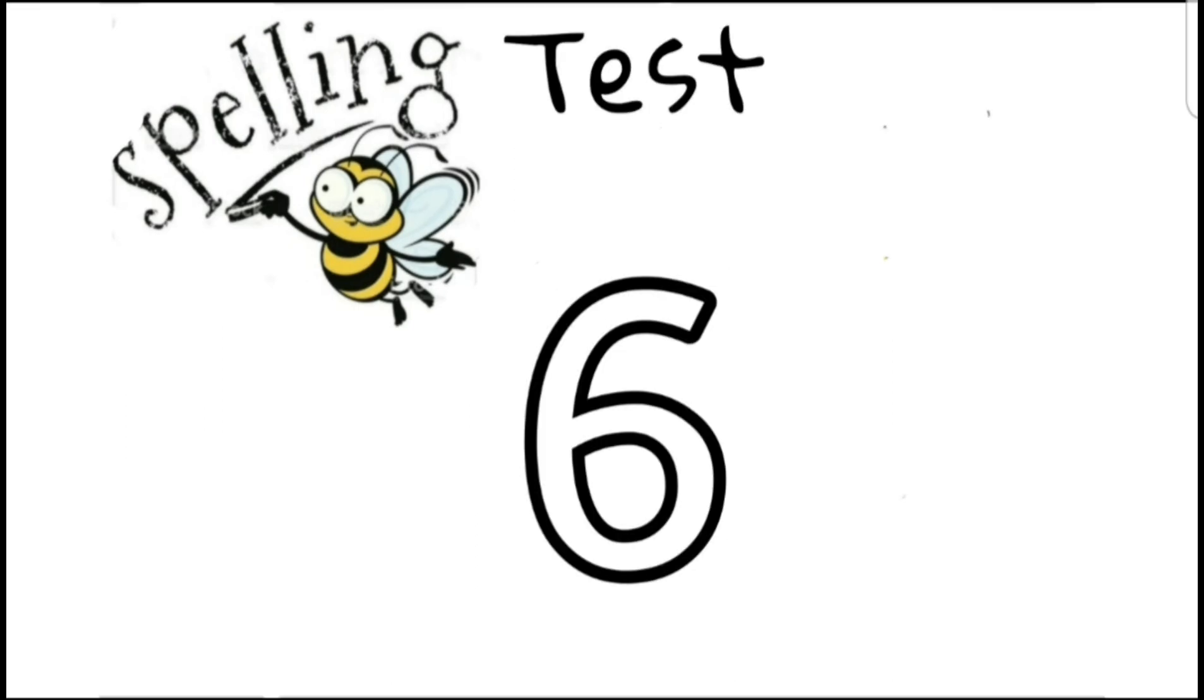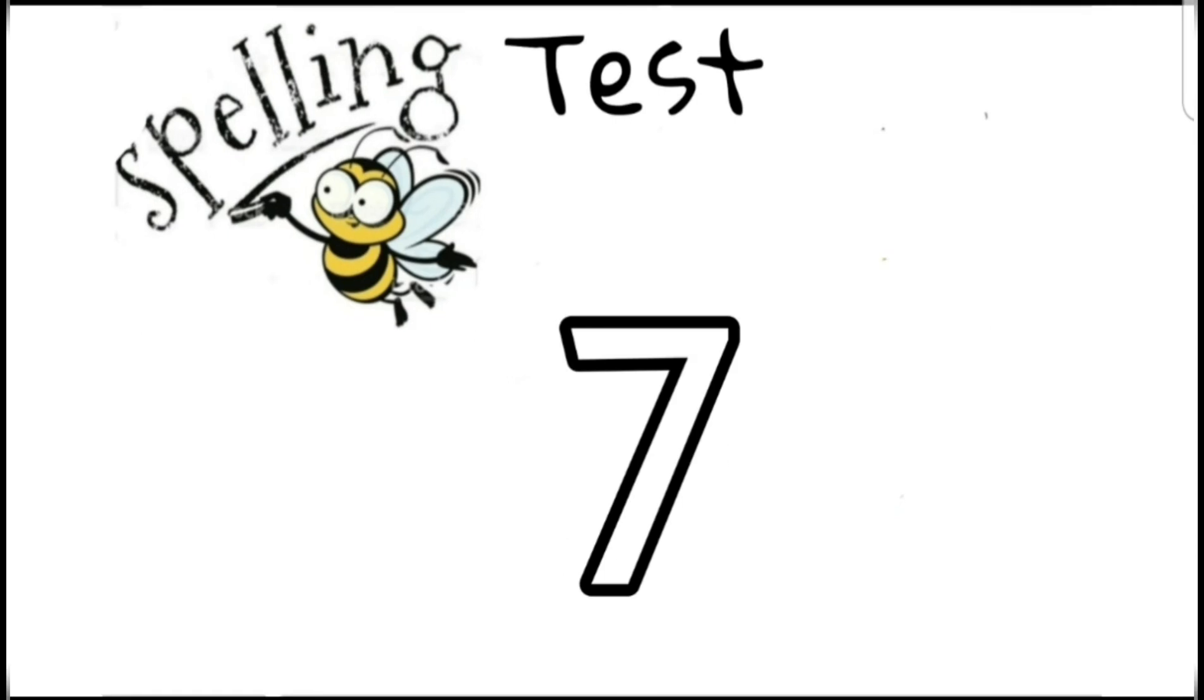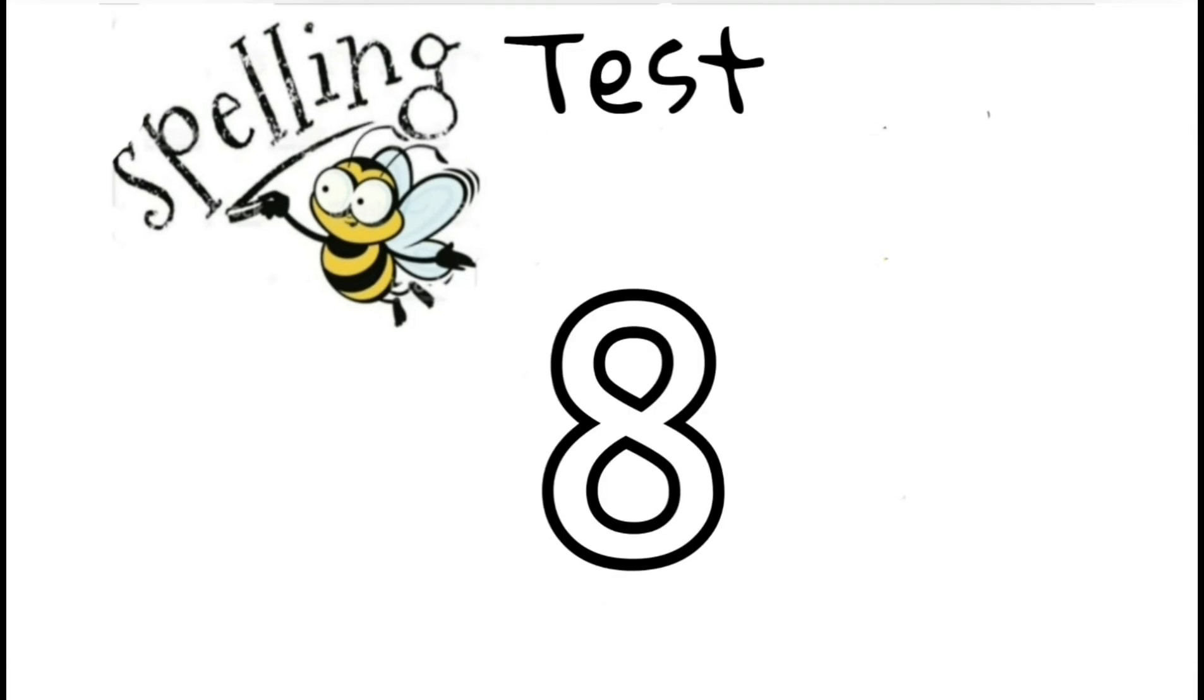Unit. I would like to buy one unit please. Unit. Union. A marriage is a union between two people. Union. United. We are stronger when we are united. United.